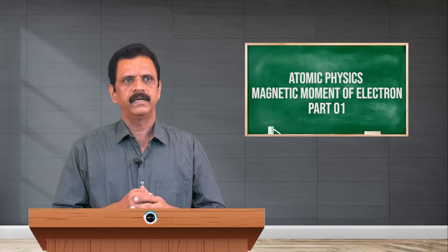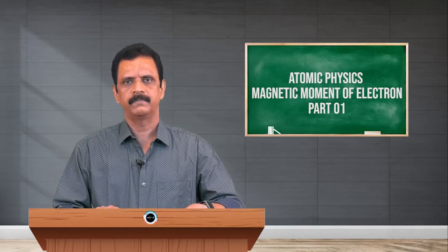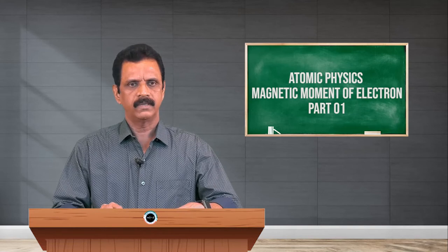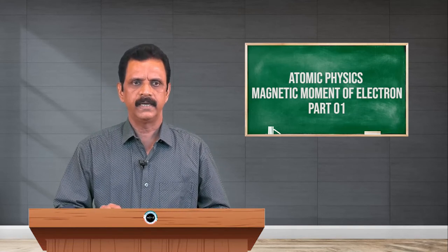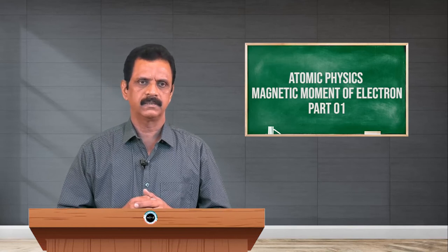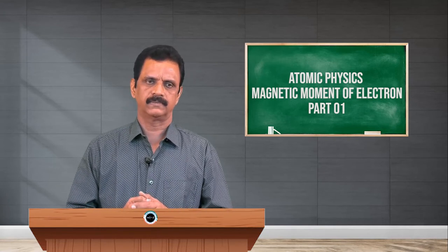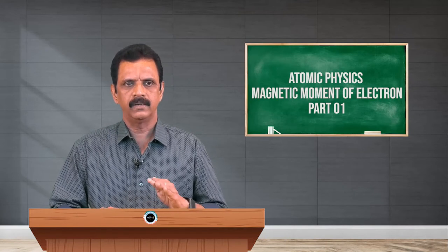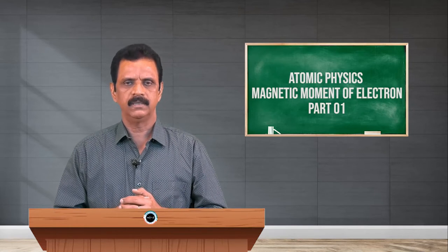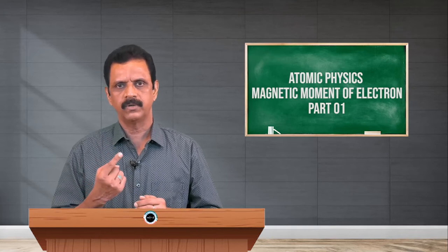Let us have a brief introduction to this topic. We have understood the structure of the atom with the help of different atom models. In the vector atom model, we have understood that electrons keep rotating about the nucleus in circular or elliptical orbits. Over and above, they have also got spin motion about their own axis. So electrons are endowed with two types of rotational motion: one, their rotation about the nucleus of the atom, and two, their rotation about their own axis, called spin.